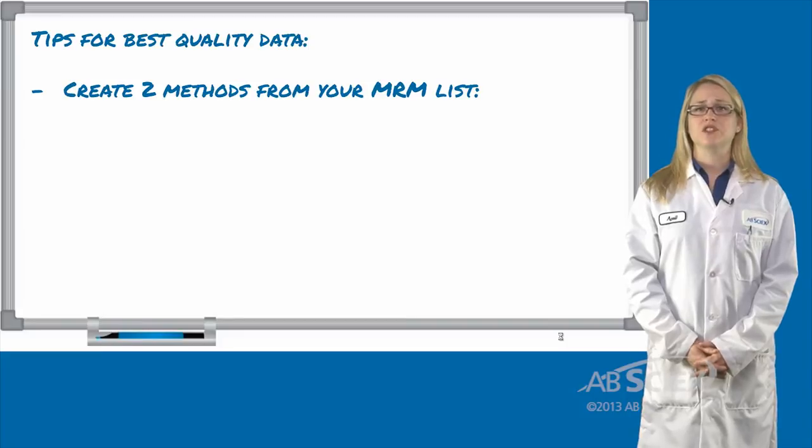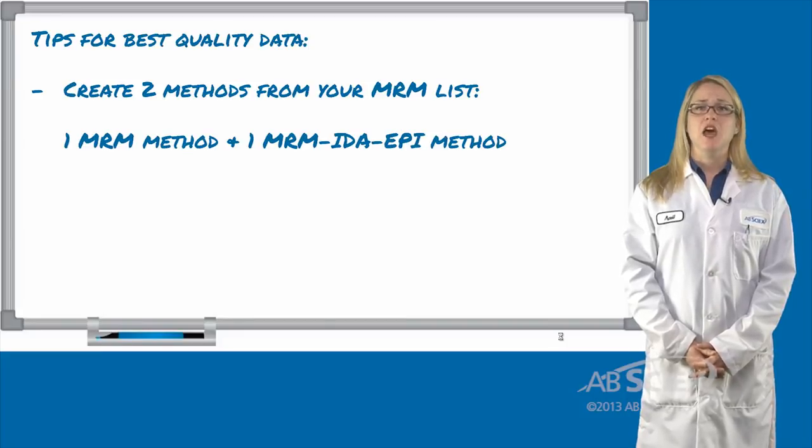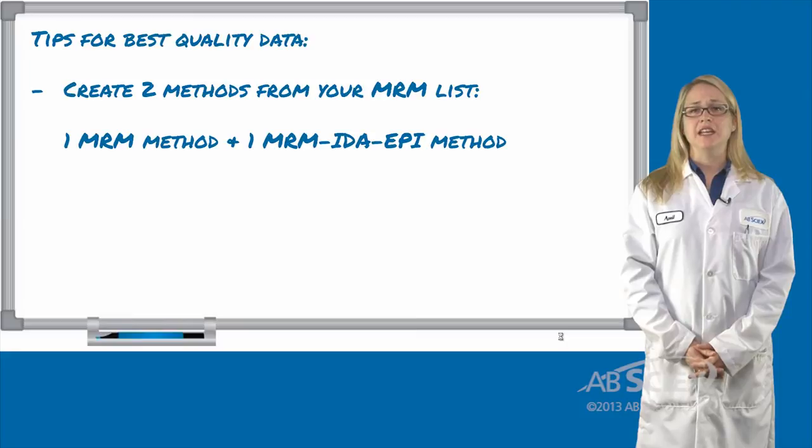it's always best to create two acquisition methods, one basic MRM method and one MRM method with added IDA EPI.